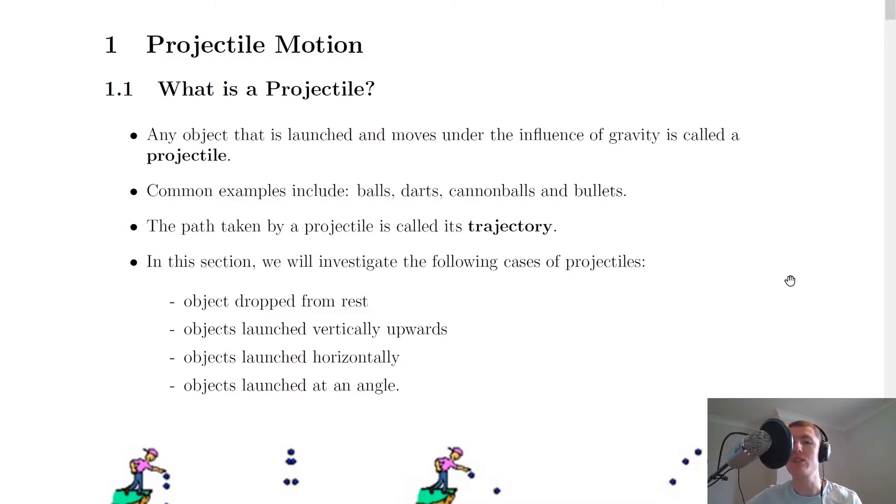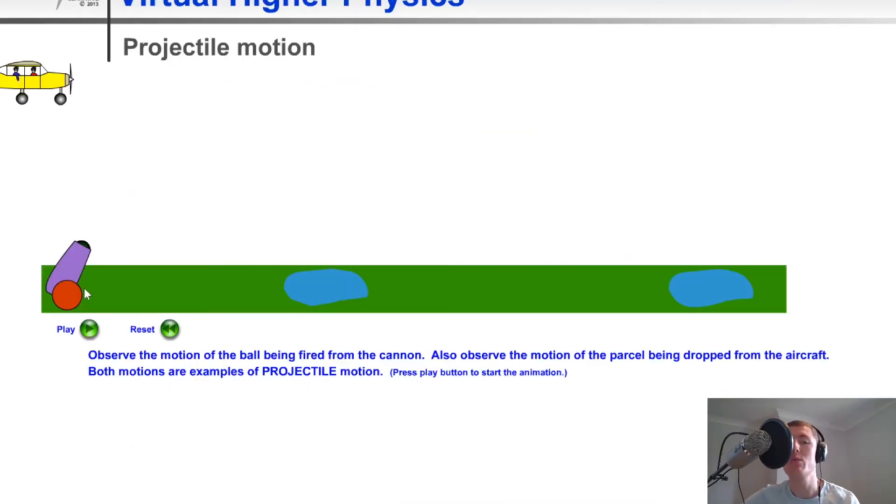And just to show you a little animation to help you visualize this, here we've got a cannon which will fire a cannonball with full projectile motion and we've also got a plane which will drop a package out of the sky with half the projectile motion. So here we've got the full projectile motion and half the motion.